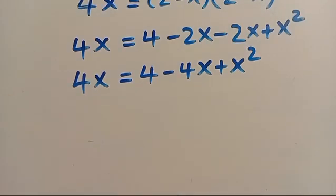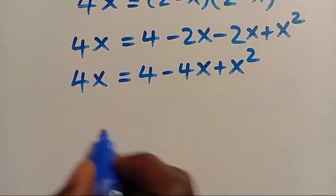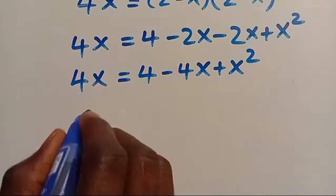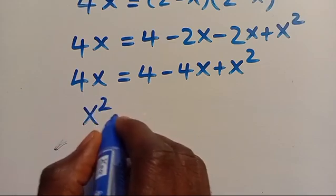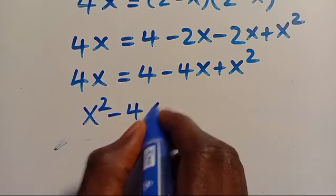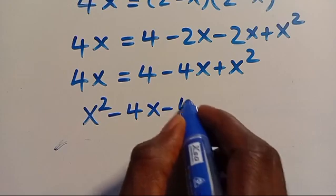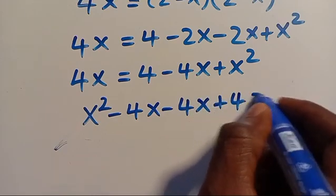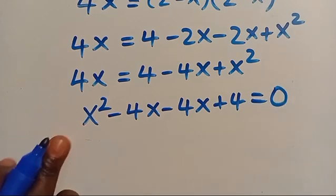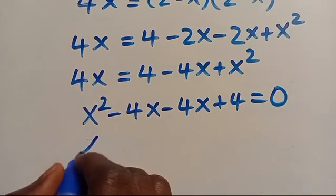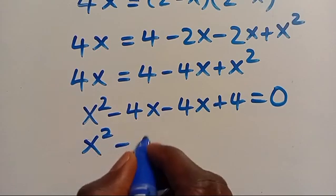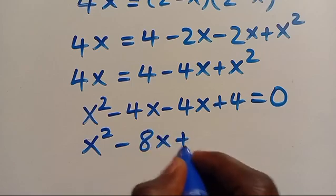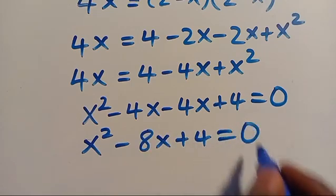Collecting the like terms, we can have X squared minus 4X minus 4X plus 4 equals 0. So that gives us X squared minus 8X plus 4 equals 0.